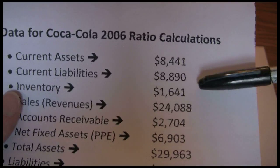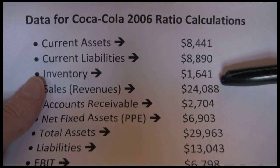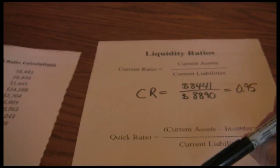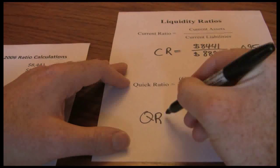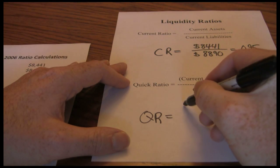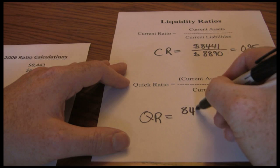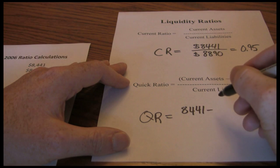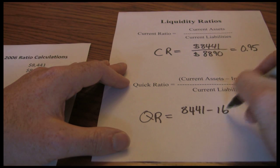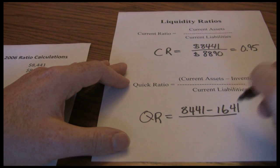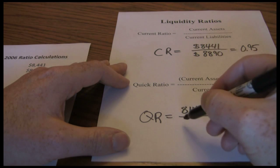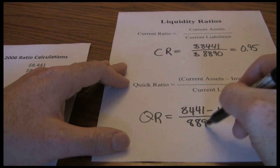We already discussed our current assets and current liabilities. Now we need our inventory, $1,641. Our quick ratio is current assets, $8,441, minus inventory, $1,641, divided by current liabilities, $8,890.